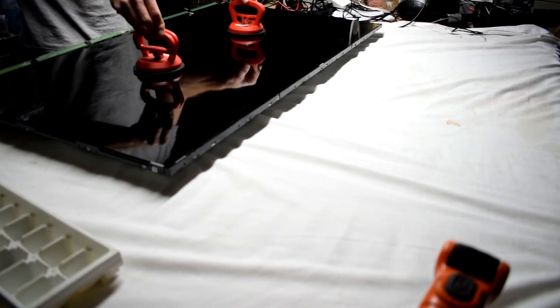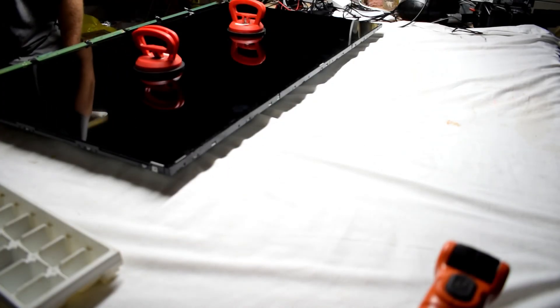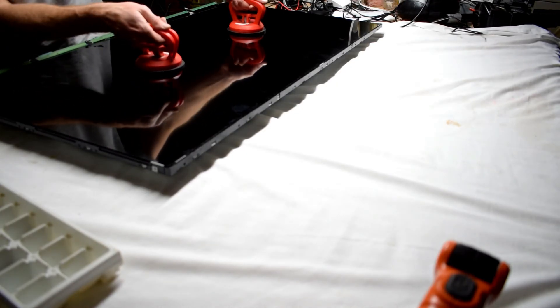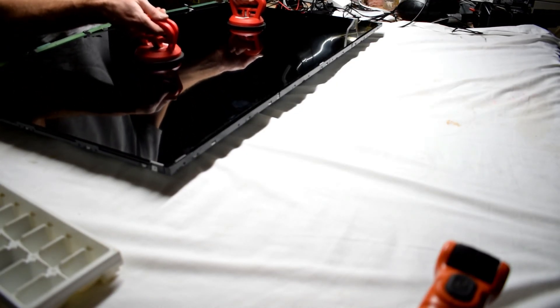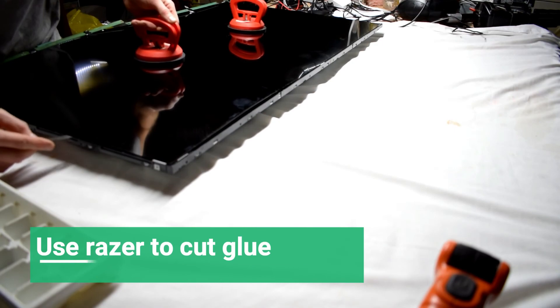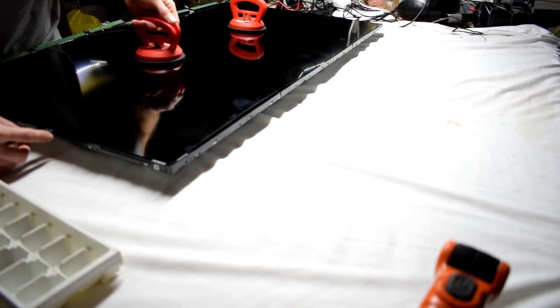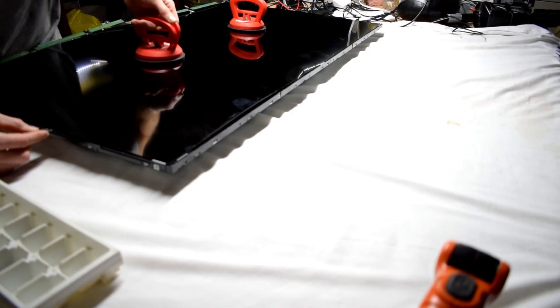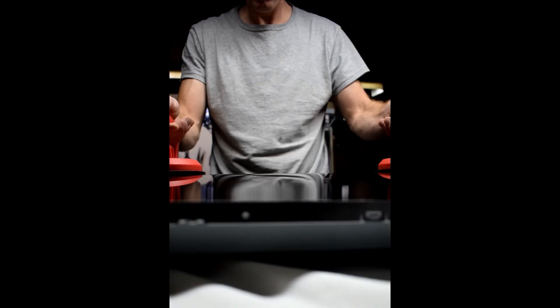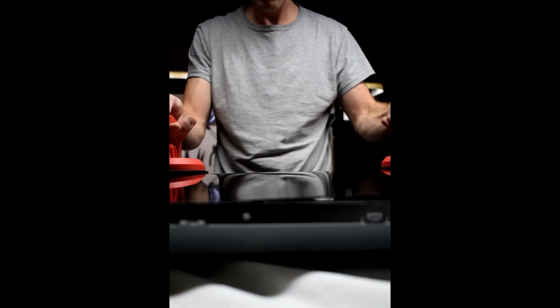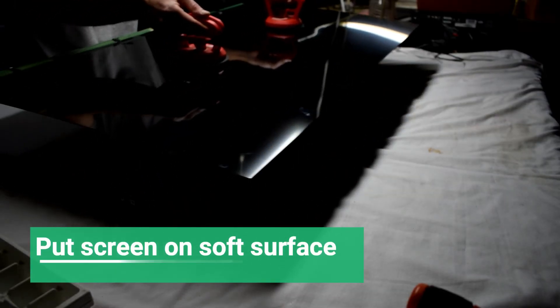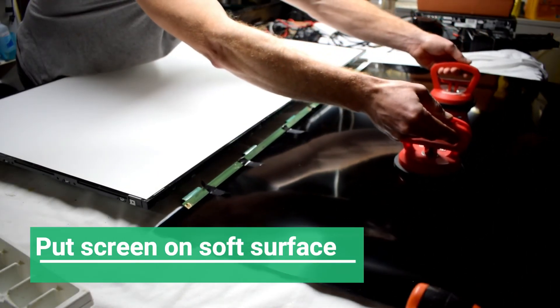Using suction cups, as I pull up you can see that there's some tape. So you need to use a razor to cut the tape along the screen. Be very gentle when you're doing this. I found that just giving it a little tug at the last step, it was able to break free.